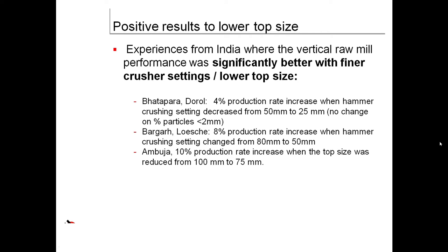Positive results show that vertical raw mill performance was significantly better with finer crusher settings and lower top size. 4% production rate increase when hammer crushing setting decreased from 80mm to 50mm, and 10% production rate increase when top size was reduced from 100mm to 75mm.